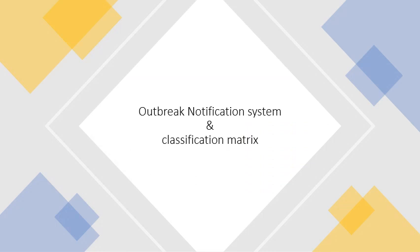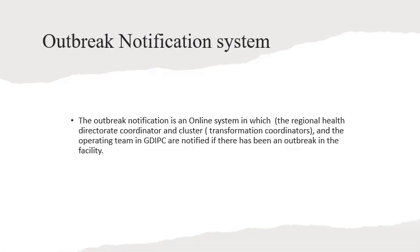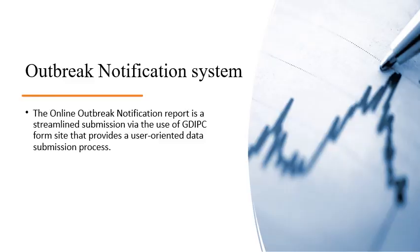The Outbreak Notification System is the online system in which the regional health directorate, consultors, clusters, and operating team in GDPIC are notified if there has been an outbreak in the health facility. The Online Outbreak Notification System report is a streamlined submission via the General Health Directorate form site that provides a user-oriented data submission process.